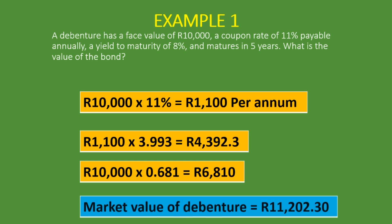Adding the two present values together gives us the market value of the debenture: R11,202.30. If your answer differs slightly from the one calculated using the formula, that's due to rounding differences — it shouldn't matter. That is how you use the tables to calculate the present value of a debenture. If you've gained value from this lesson, please subscribe, like the video, and share it with those who might find it helpful. Till next time, cheers.